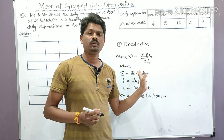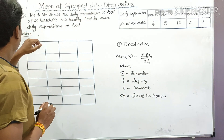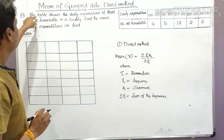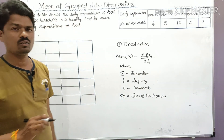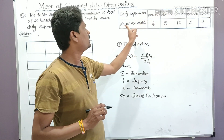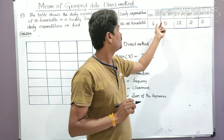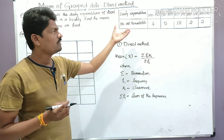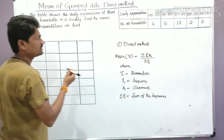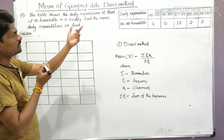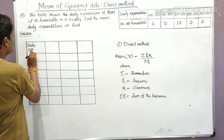Now here is a question: 'The table shows the daily expenditure on food of 25 households in your locality. Find the mean daily expenditure on food.' The table gives daily expenditure in rupees and the number of households. For the given problem we have to prepare a tabular form. The data is given horizontally, so we write it vertically. First column: daily expenditure in rupees.